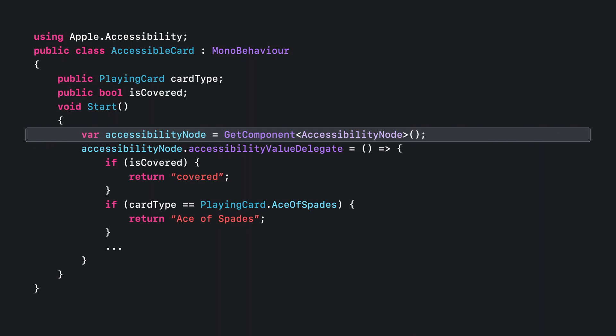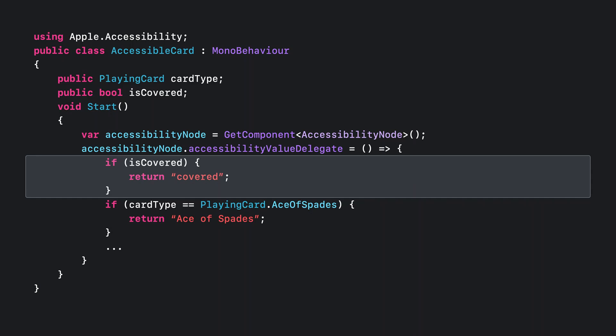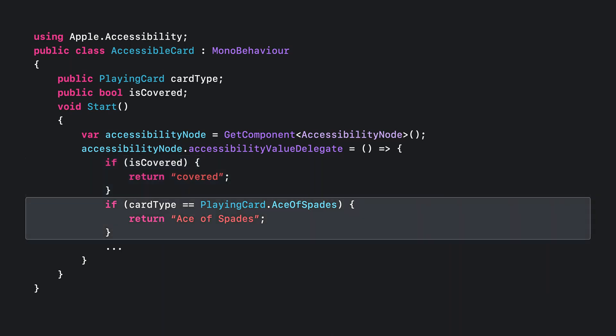So now let's add the accessibility value to these cards. First, we get the Accessibility node component attached to this game object. Next, set the accessibility value delegate to a function that returns the card face value dynamically. Inside this function, if the card is covered, we return 'covered' for the accessibility value. Otherwise, we enumerate all card faces and return a description for each, like Ace of Spades. And that's it.